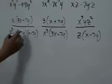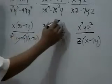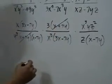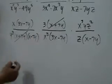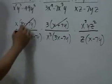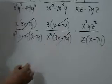We have this x plus 7y cancels with x plus 7y here. 3x minus 7y with this 3x minus 7y.